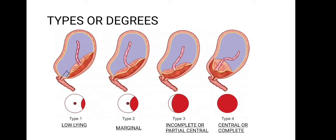Moving on to the types or degrees of placenta previa, there are four main types. Type 1 is low lying, type 2 is marginal, type 3 is incomplete or partial central, and type 4 is complete or central. One thing common in all types is that the placenta is situated in the lower segment.